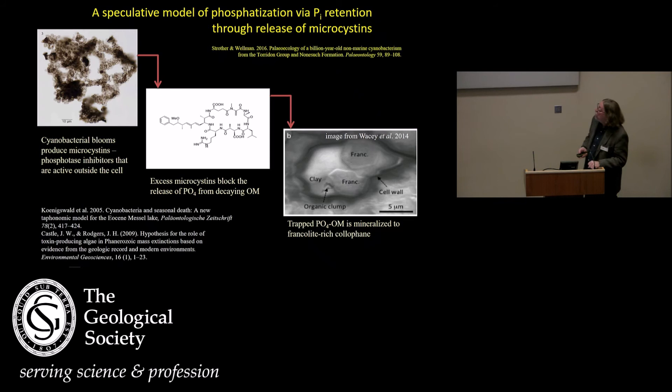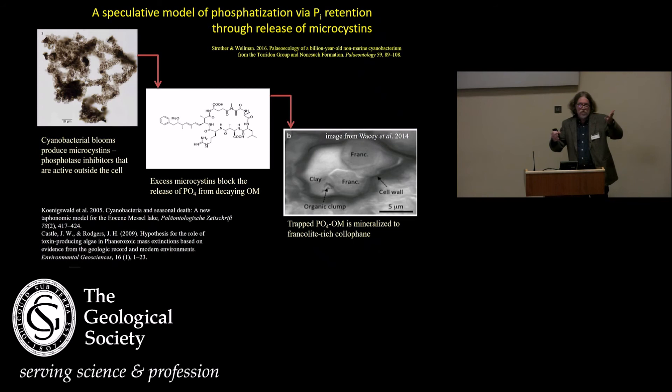Microcystis is notorious for producing this non-ribosomal amino acid called microcystin — or microcystins — which is a family of phosphatase inhibitors. These are extruded externally by cyanobacteria, and they're known in Brazil to kill dogs and that sort of thing. There's actually a large medical-oriented literature on microcystins and the nature of this poison.